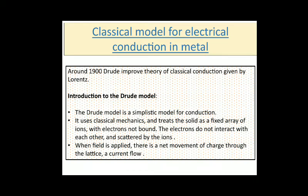Now, the classical model for electrical conduction in metals: around 1900, Drude improved the theory of classical conduction given by Lorentz. The Drude model is a simplistic model for conduction in which the solid is considered as a fixed array of ions with unbound electrons that do not interact with each other. When a field is applied, there is a net movement of charge through the lattice—that is a current flow.